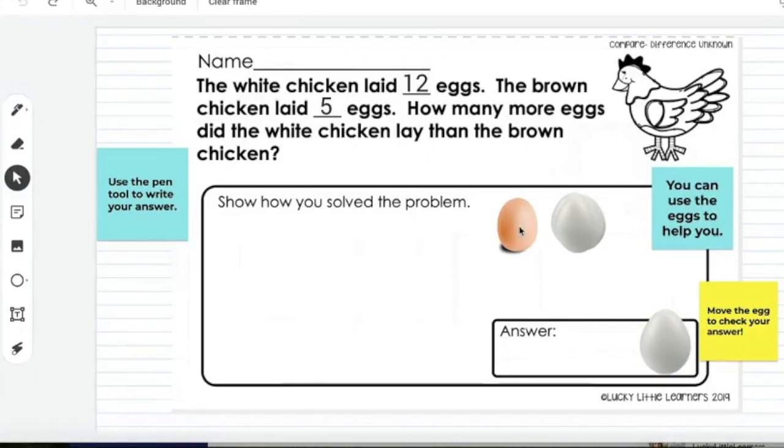That way, if there are students who wanted to do a one-to-one correspondence, lay the eggs in rows here, they could do that. A lot of students will just count up, count back. Some students might come over here and use a pen to write some numbers.